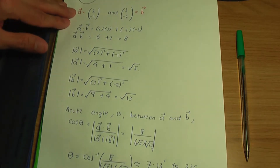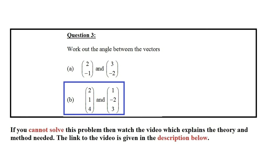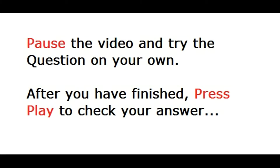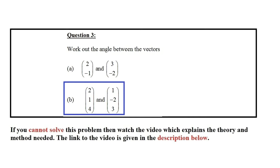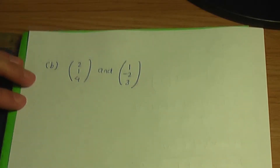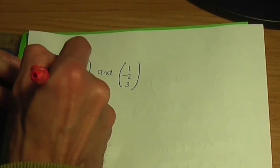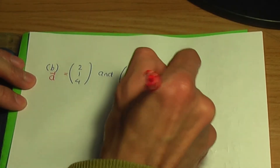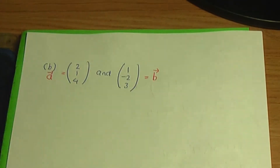Now we have another part to do. For part B we need the same calculation but for these two column vectors: the first is (2, 1, 4) and the second is (1, -2, 3). Let me name the first column vector A and the second column vector B.